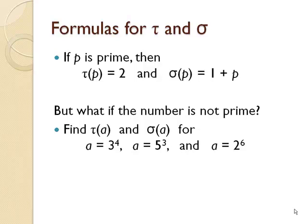What if the number is not prime? I'd like for you to find tau of A and sigma of A for a few special cases where it's a prime to a power. So 3 to the 4th power. 5 to the 3rd power. 2 to the 6th power. Go ahead, pause the video now and work on that.